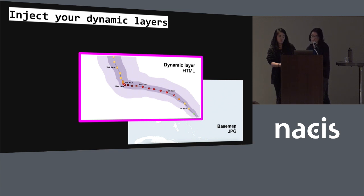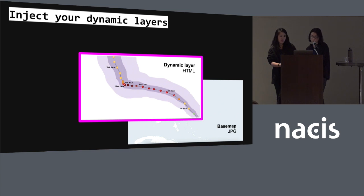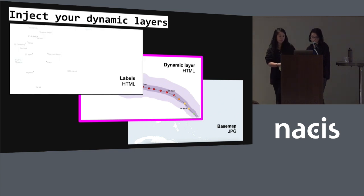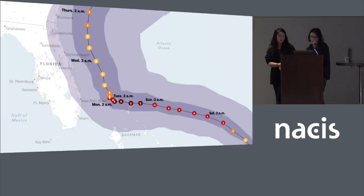The setup uses an empty div container in the HTML, which allows us to consistently inject updated data files. In this case it's just an SVG layer we generate with D3. That way we can use the same base map and keep updating the data as it comes in. Because we have the parameters file, we can line everything up fairly easily. On top of that, it's just our labels in HTML.